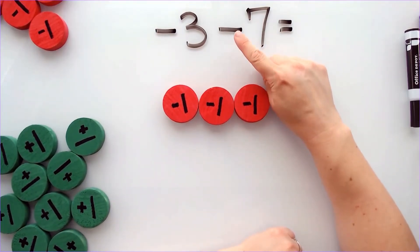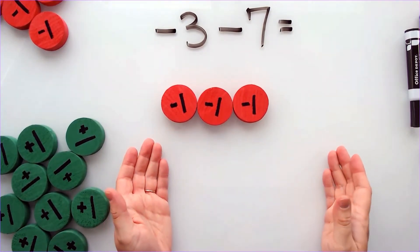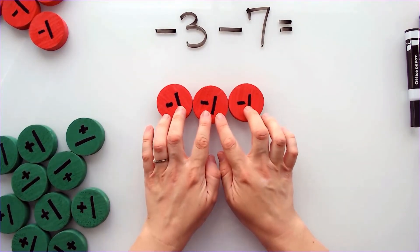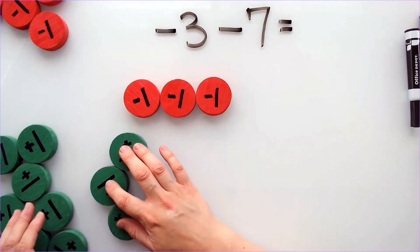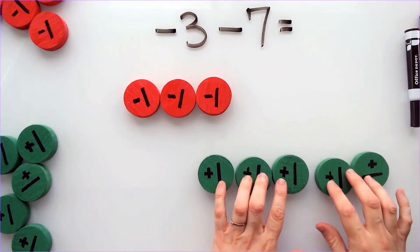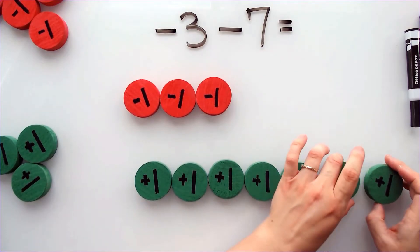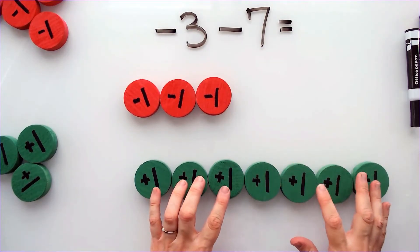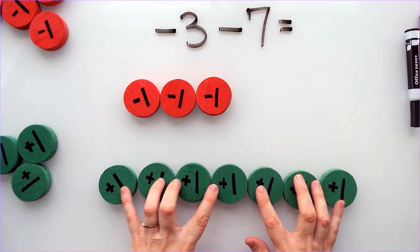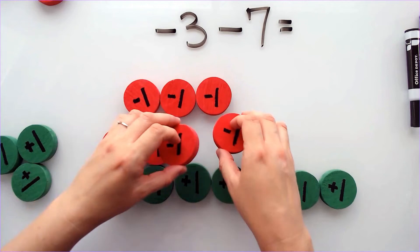And I need to subtract 7. Again, this is the same thing as saying take away 7 positives. But I don't even have any positives whatsoever. So what I'm going to do is I'm going to add 7 positives. But I need to be careful because if I'm adding 7 positives, I also need to add 7 negatives. So here's my 7 positives. Here's my 7 negatives.